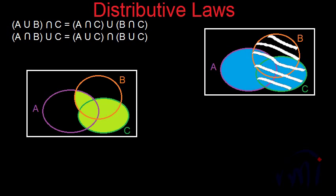The portion where we find both blue shade and the white lines represents A union C intersection B union C — and it is the same area shaded in light green in the left Venn diagram. So this was the explanation of the distributive laws using Venn diagrams. We are learning this because we are going to use these laws in probability, which is coming next. Keep watching MathSmart — bye-bye till then.